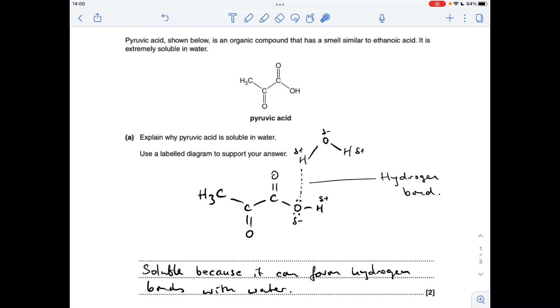So explain why pyruvic acid is soluble in water. Well, it's because it can form hydrogen bonds with the water. There's a couple of ways you can do the diagram, so I'll just quickly talk through this one first and I'll show you the other way.